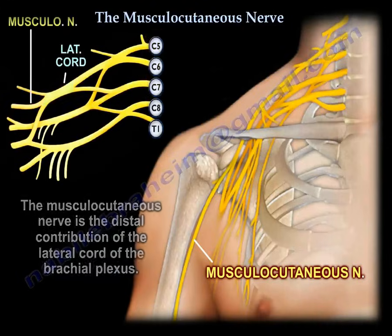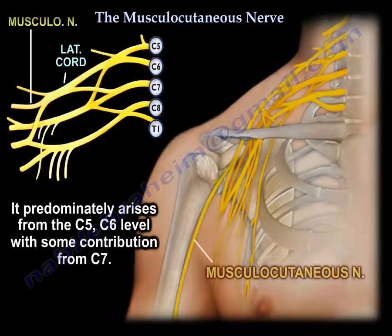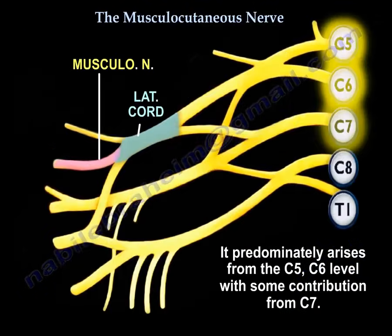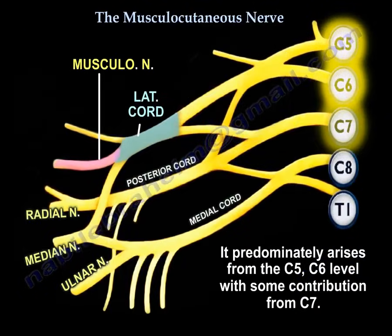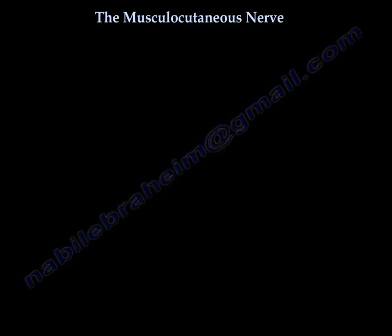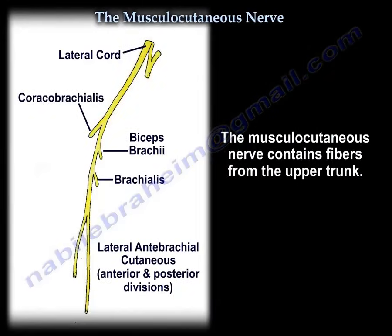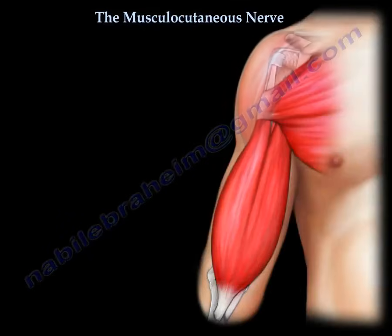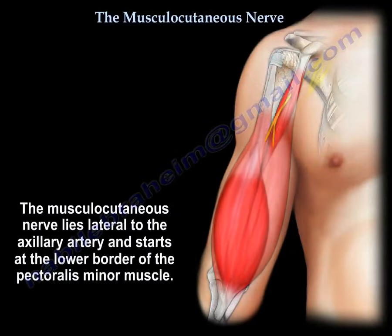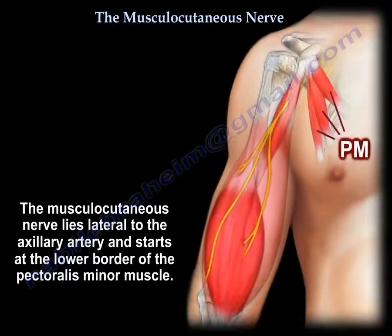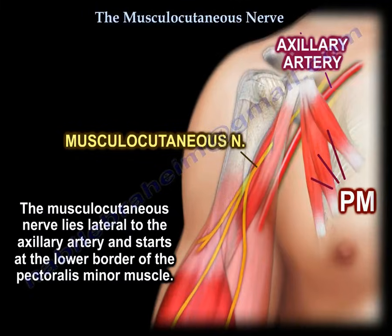It predominantly arises from C5 and C6, with some contribution from C7. As shown in the diagram, the musculocutaneous nerve is the distal continuation of the lateral cord, and it contains fibers from the upper trunk.